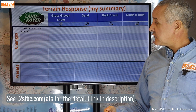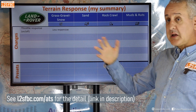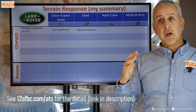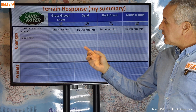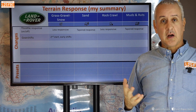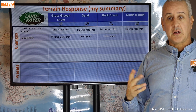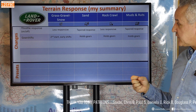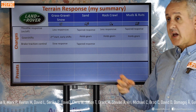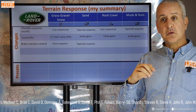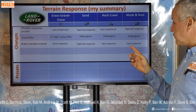In Land Rover's system, throttle response in grass/gravel/snow is less responsive because that's a slippery mode. Sand has a tapered response — starts slow then gets quicker. Rock crawl is generally less responsive, and mud and ruts is similar to sand. For gear shifts, grass/gravel/snow uses a second-gear start with early upshifts. Sand holds gears for power delivery. Rock crawl holds gears so you're not constantly changing gears over rough terrain, and mud and ruts holds gears a bit too. Brake traction control in grass/gravel/snow has a tapered response allowing some wheel spin, but as the speed difference between wheels increases it activates more. Rock crawl uses a very fast response with absolute minimum wheel spin, and mud and ruts is similar.